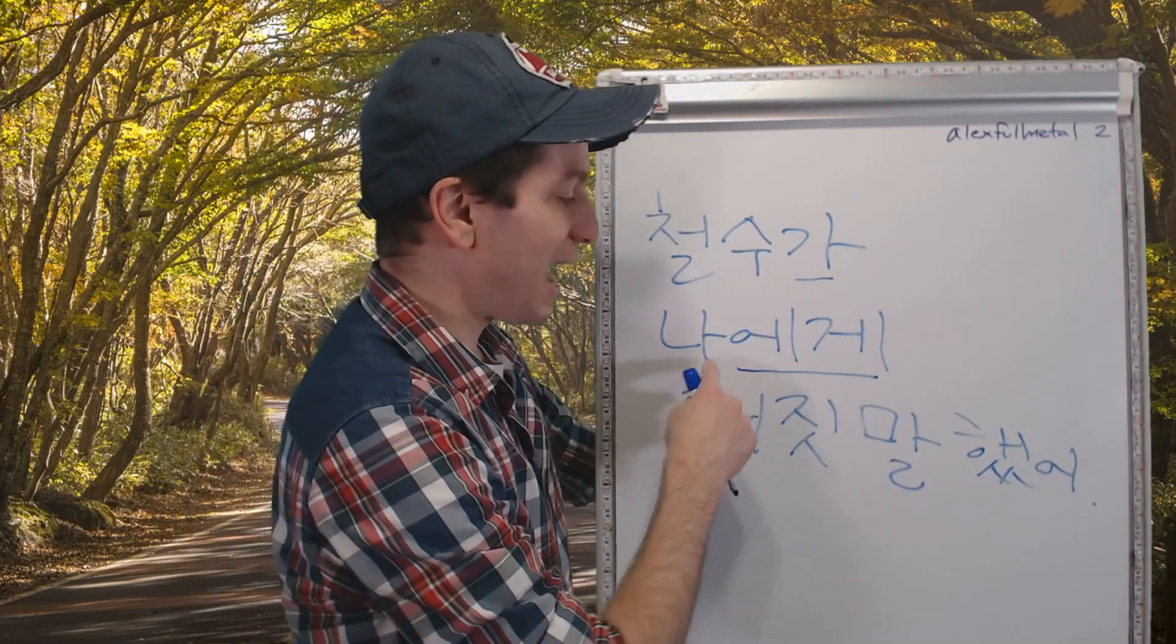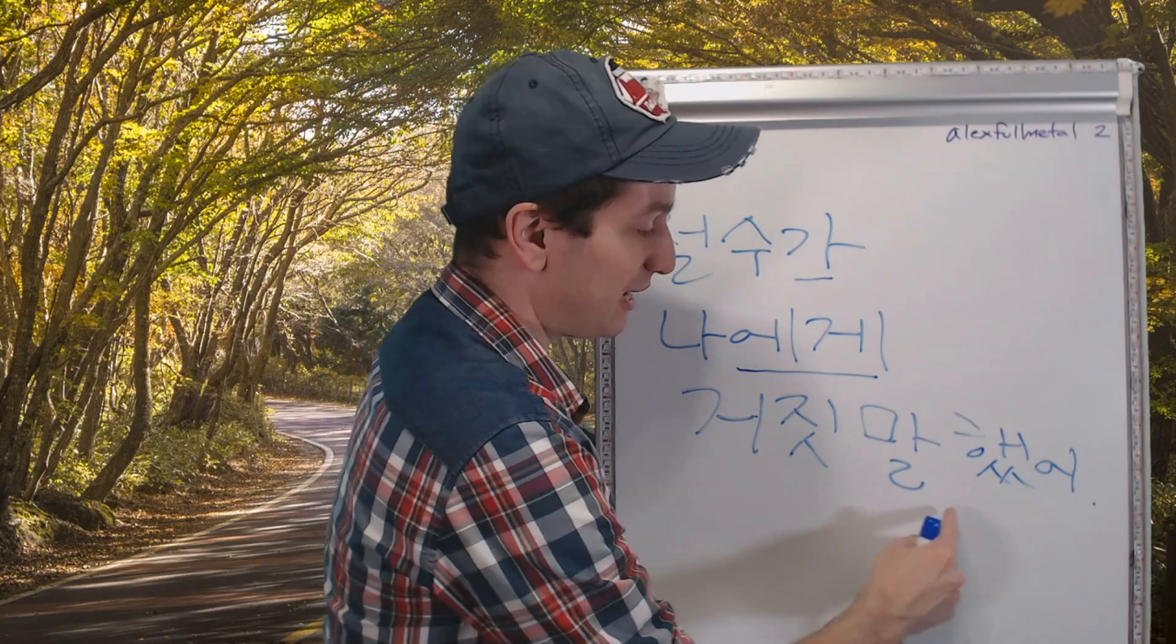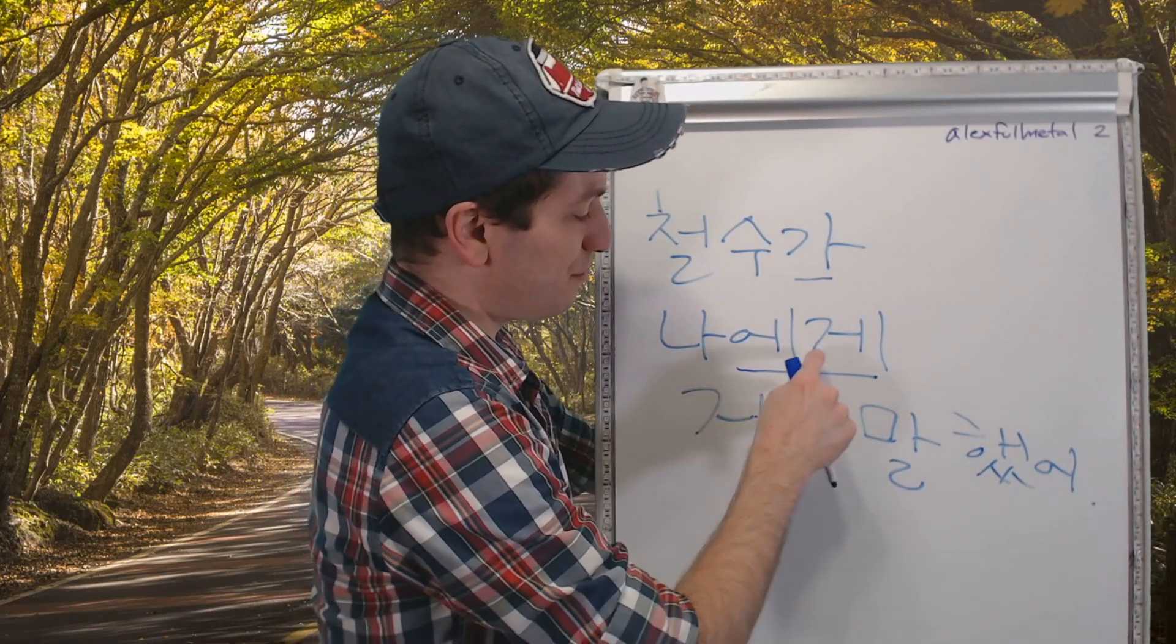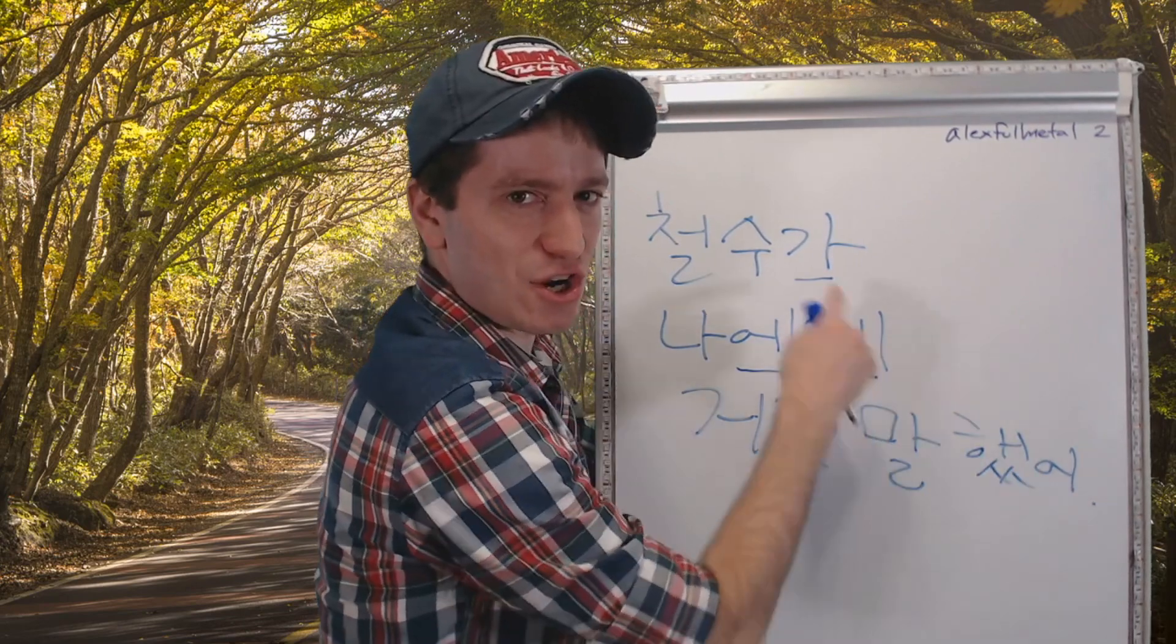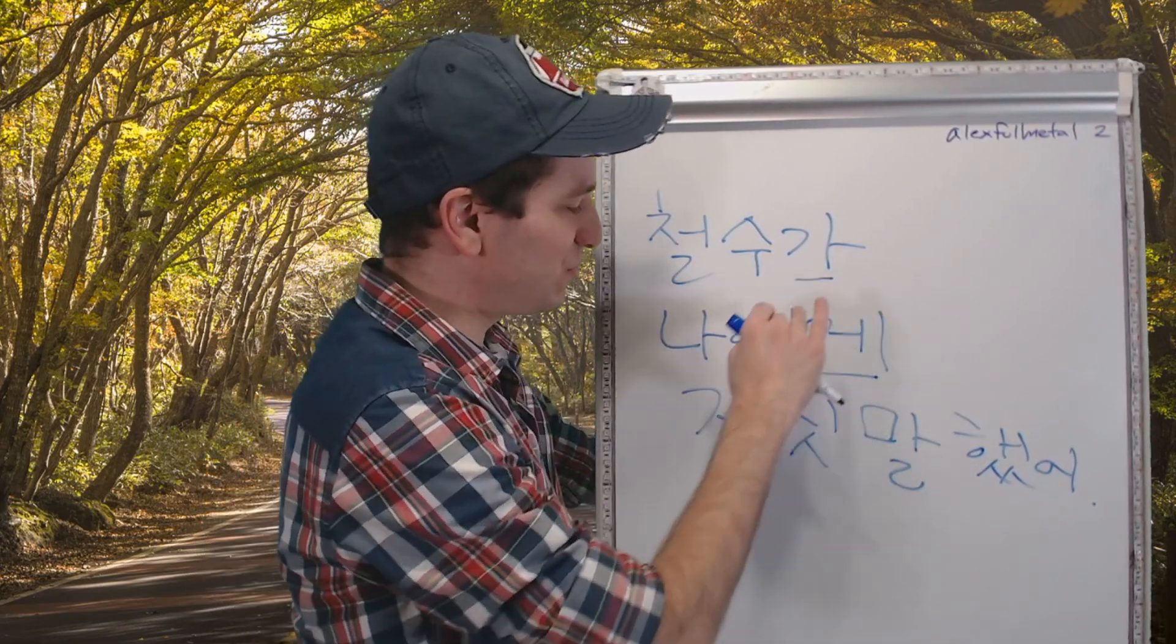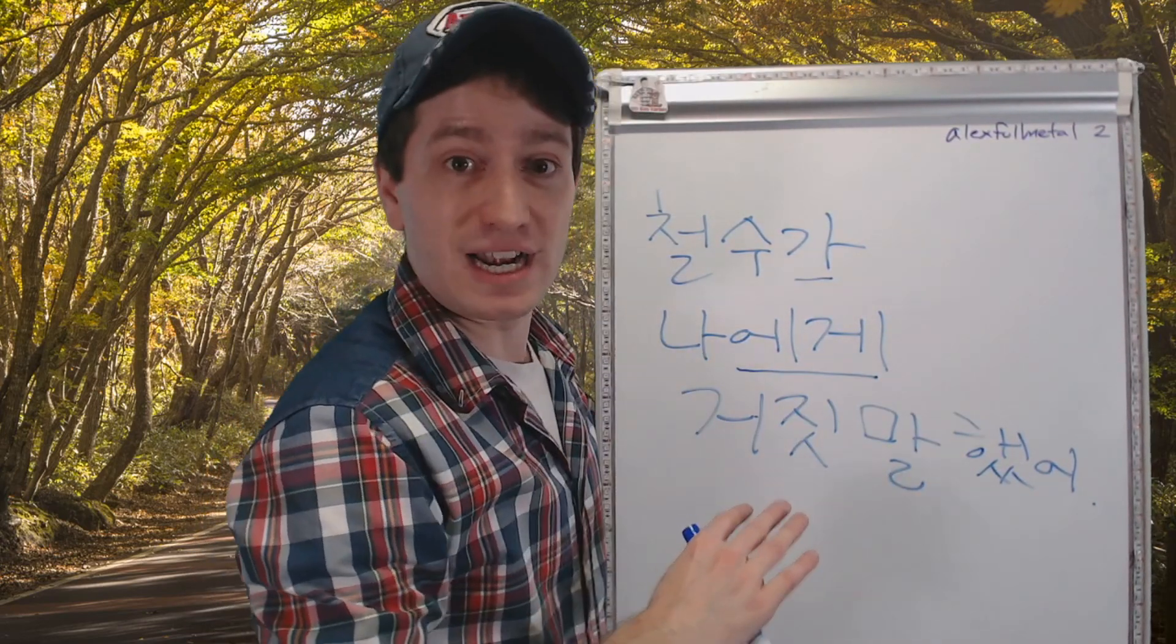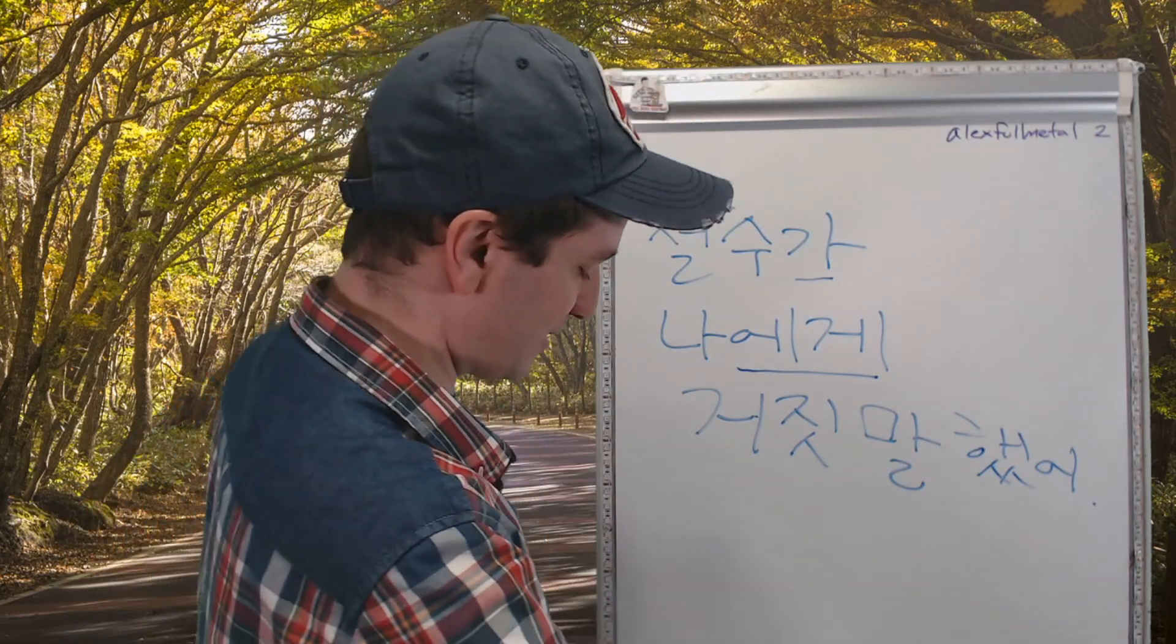Let's do another example. 찰수가 나에게 거짓말 했어. 찰수, to me, lied. 찰수 lied to me. 찰수가 나에게 거짓말 했어. And let's move on to our next form.